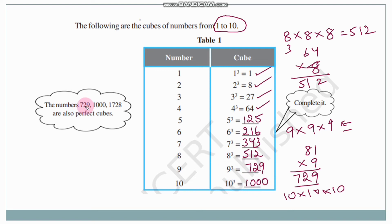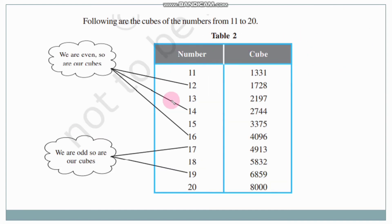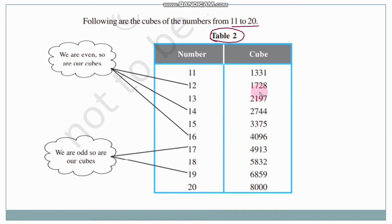Numbers like 729, 1000, and 1728 are also perfect cubes. In the next table we have cubes from 11 to 20. In the previous table we saw cubes from 1 to 10; now let us recall cubes of numbers from 11 to 20.